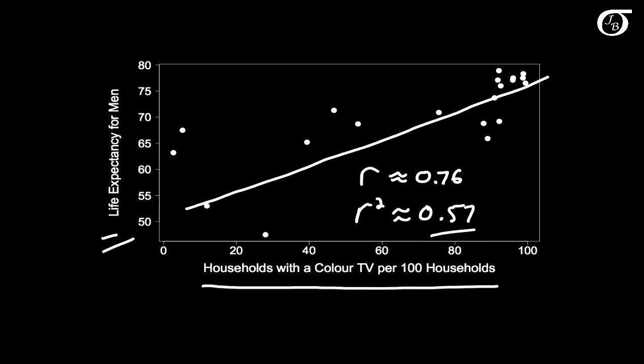Does that mean we can increase life expectancy by shipping countries lots of televisions? Well, that's unlikely at best. What's happening here is that there's an underlying variable — the wealth of a country — which is strongly tied into both the number of households with a color TV and the life expectancy. So it's unlikely that there's a strong direct causal link between the number of televisions and life expectancy for men.